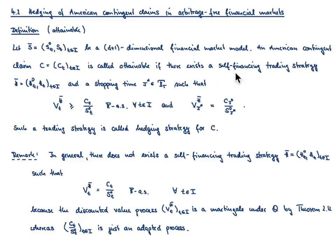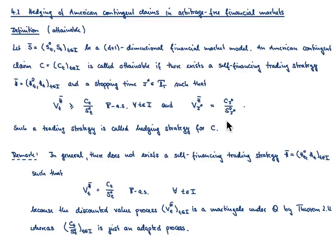Namely, if there exists a self-financing trading strategy, denoted by H-bar, and a stopping time tau star taken from the set of all admissible stopping times, such that the following holds true. On the one hand, the discounted value process should dominate the discounted American contingent claim, meaning that V_H-bar of t should be larger or equal to C_t divided by S0_t, P almost surely for every time point t in our index set. And on the other hand, the discounted value process evaluated at that particular stopping time tau star should be equal to the discounted American contingent claim evaluated at tau star. If such a self-financing trading strategy and stopping time exist, I call that pair a hedging strategy for our American contingent claim C.